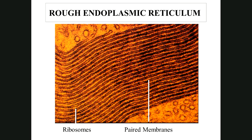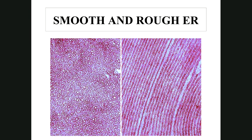Here's rough ER under the electron microscope — you can see the long tubules covered in little dots, those are ribosomes on the outside making proteins and threading them inside the membranous network. This is a classic image found in most textbooks. Comparing smooth (left) versus rough (right): the smooth has clean tubes, the rough has visible ribosome dots.